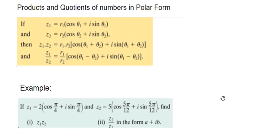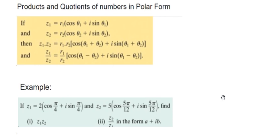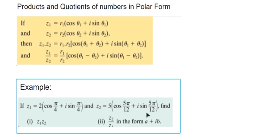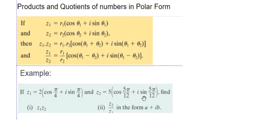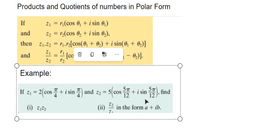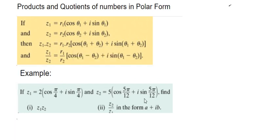Hi folks, this is products and quotients of numbers in polar form. You can be given two numbers in polar form and asked to multiply them or to divide them. So that's what this is about.